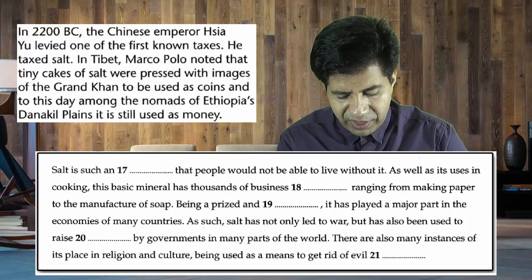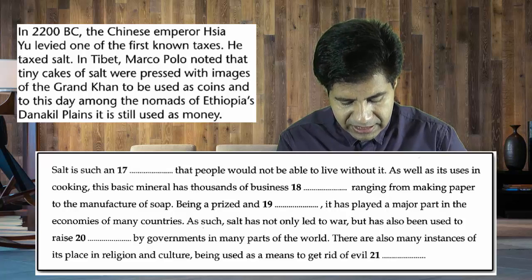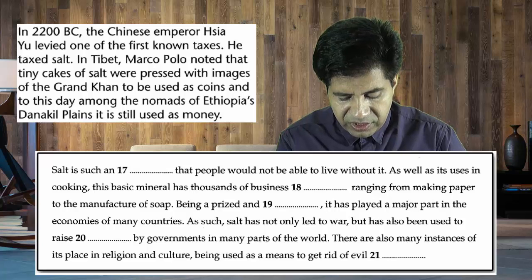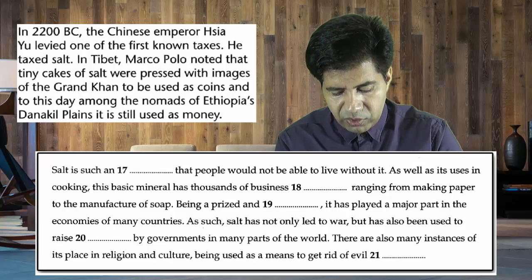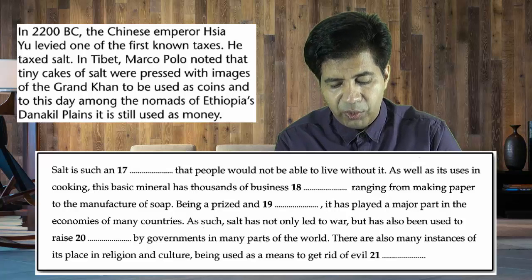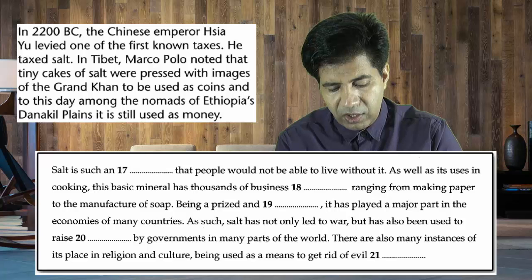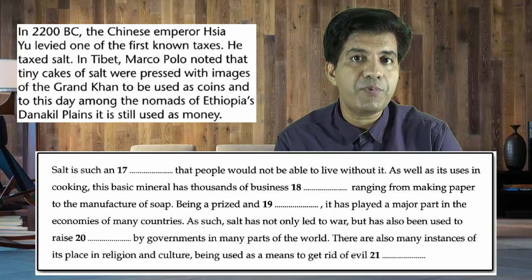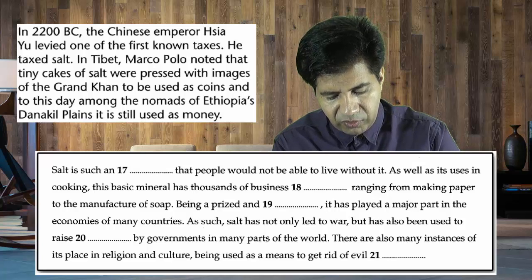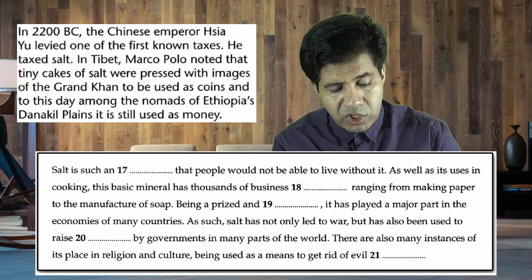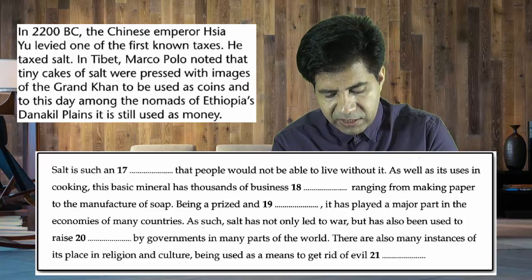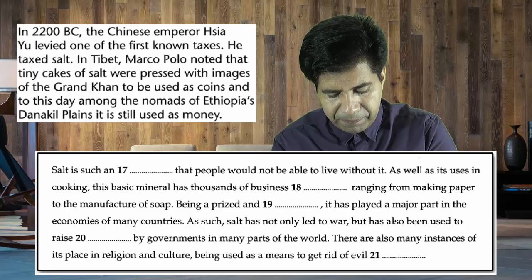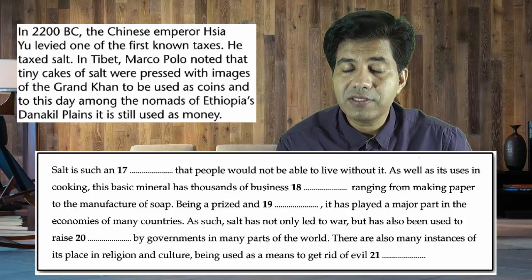I found it. In 2200 BC, the Chinese Emperor levied one of the first known taxes — he taxed salt. The Chinese Emperor represents the government. So the answer is 'taxes.' Salt has also been used to raise taxes by governments in many parts of the world — Tibet, Marco Polo noted that, and other places are also mentioned. The answer is 'taxes.'